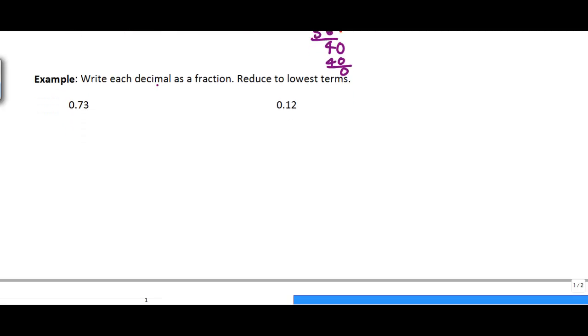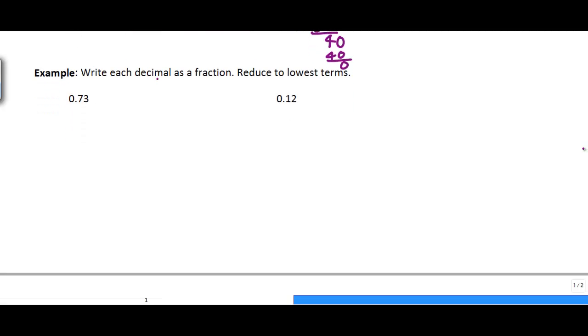So if we want to go from a decimal back to a fraction, we're going to do the same steps. In fact, this is often a little bit easier to do. The trick is this comment right here, reduce to lowest terms. So let me give you an example. 0.73. I've already seen that this is the 10th spot. And then this is the 100th spot. So if I have a 73, then that's the same as 73 over 100.